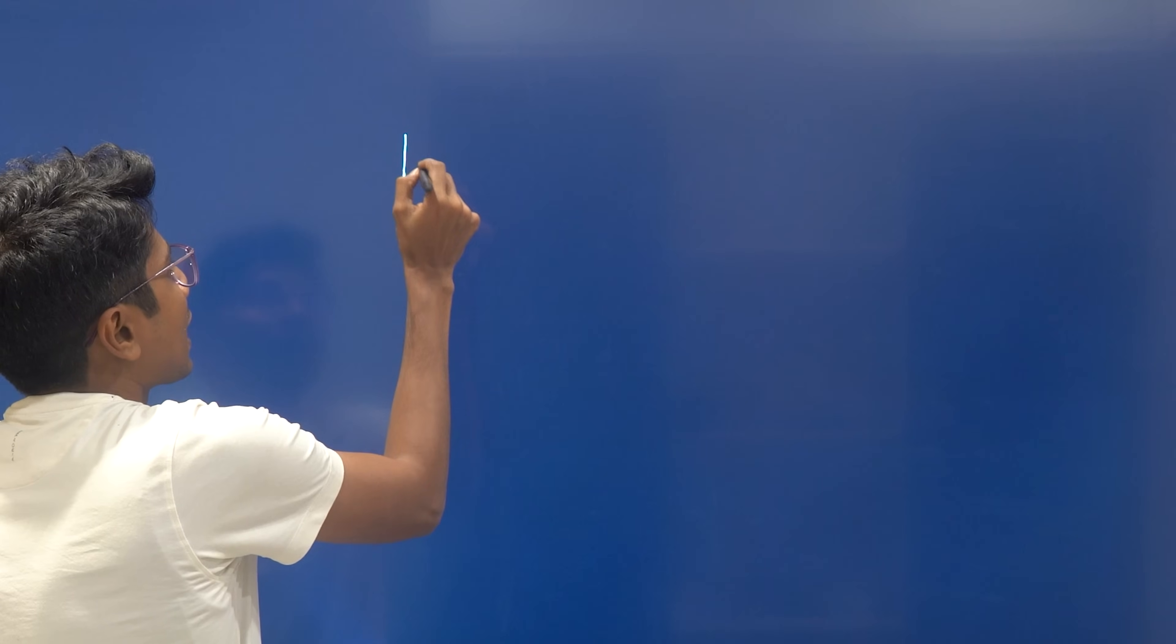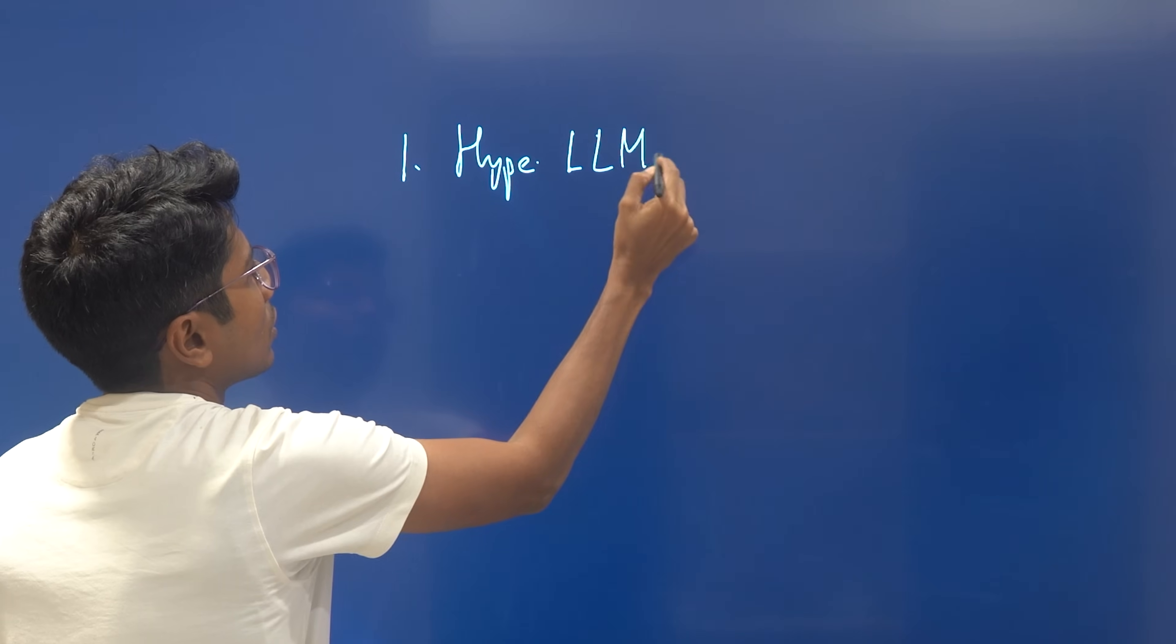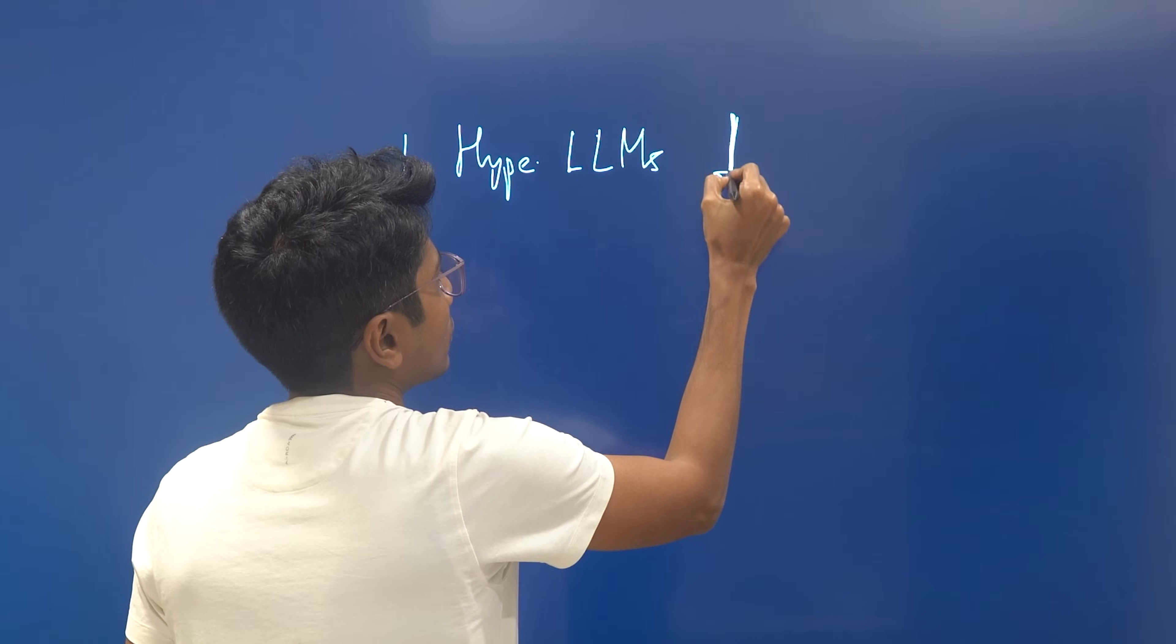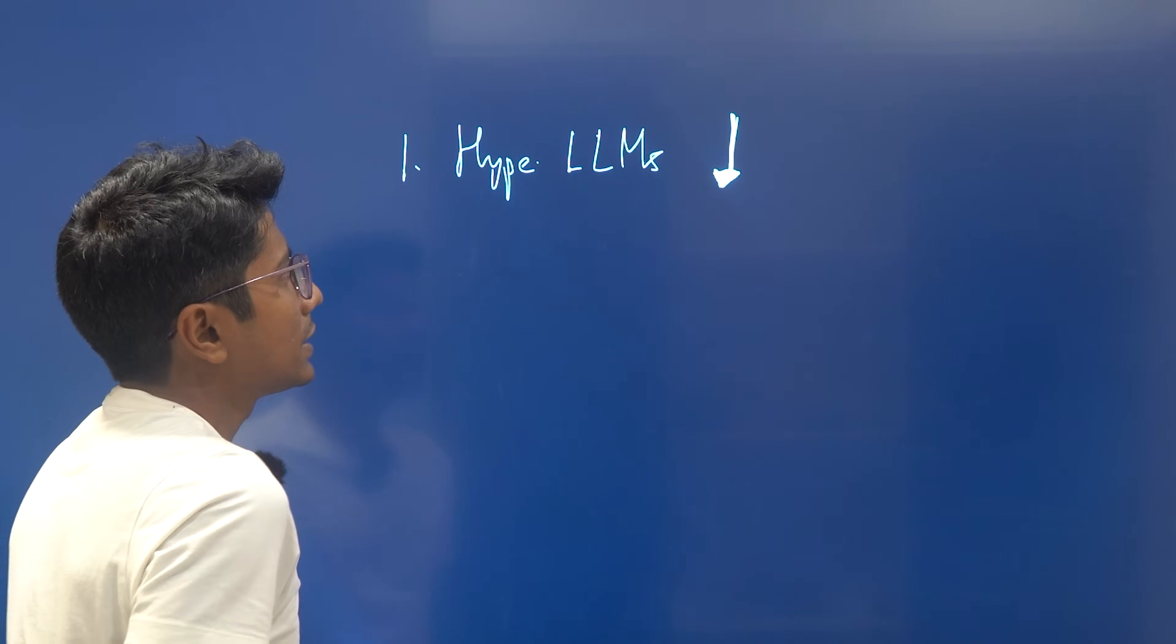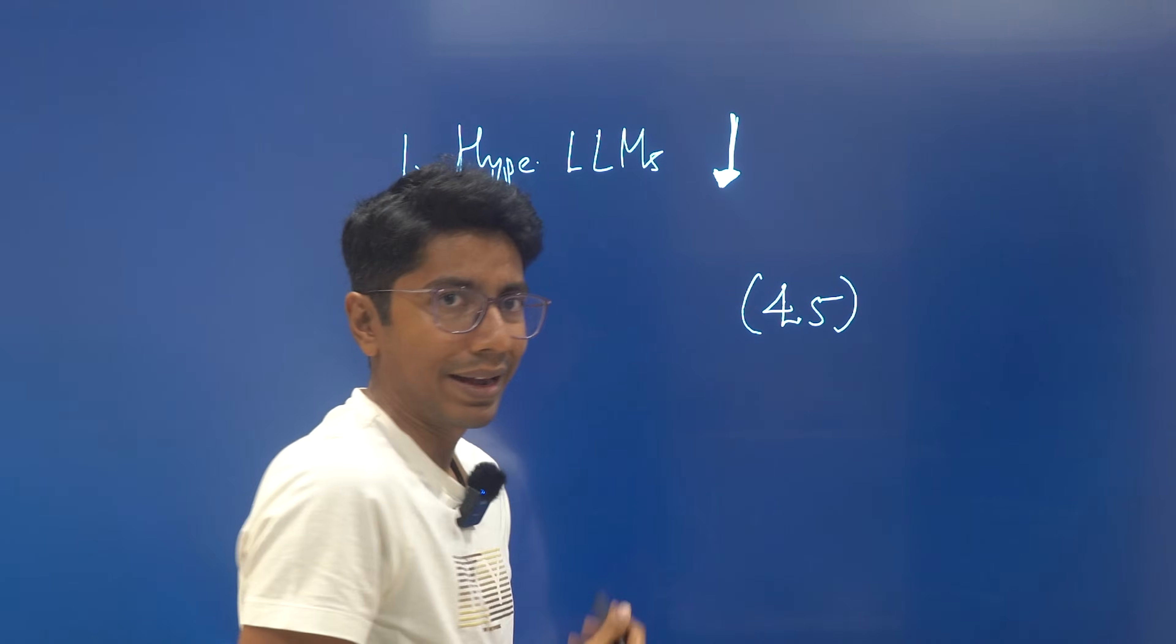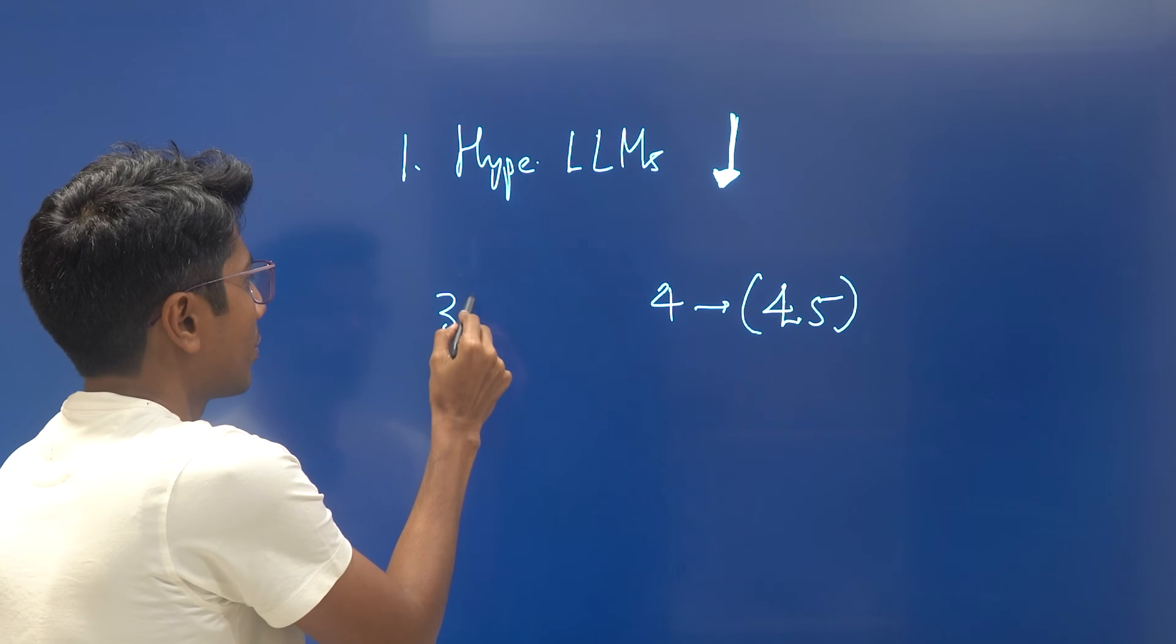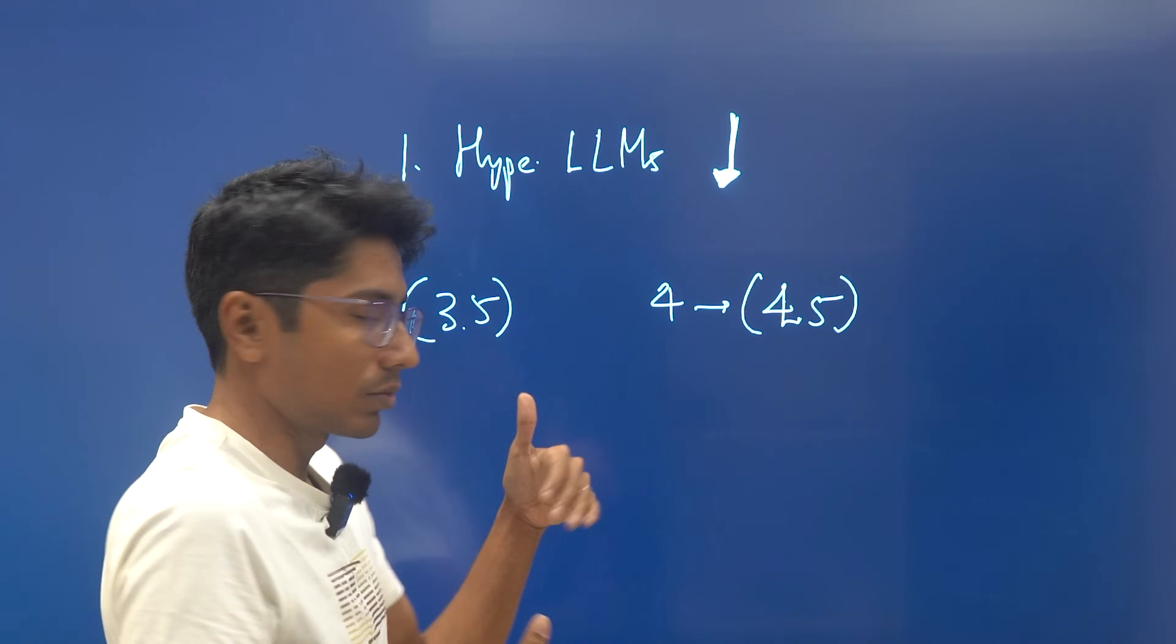The first thing that's happened is that the hype around large language models has gone down, strongly gone down. This happened before ChatGPT-5 with GPT-4.5 being released. People were wondering, is this really better than 4? I remember when 3.5 came out, of course, all of us were stunned by its performance and rightly so.